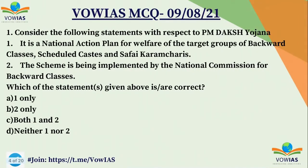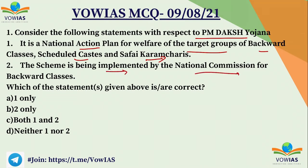The first question. Consider the following statements with respect to PM Daksh Yojana. Statement one: it is a national action plan for welfare of the target groups of Backward Classes, Schedule Classes and Safai Karmacharis. Statement two: the scheme is being implemented by the National Commission for Backward Classes (NCBC). Choose the correct answer: A. One only. B. Two only. C. Both one and two. D. Neither one nor two.